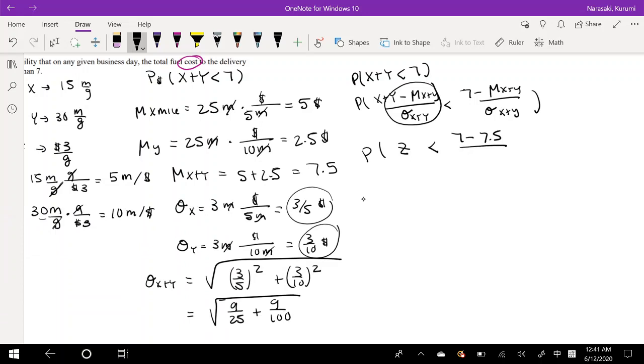And the standard deviation is this whole stuff. Maybe I will simplify it. 9 over 25 plus 9 over 100 is equal to the square root of 9 over 20.